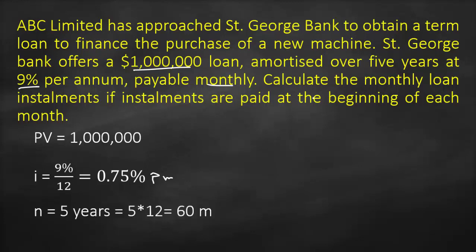Then we have the term loan of 5 years, but we said interest and time must have the same time unit. Consequently, I need to convert the years into months. So we get 5 times 12, which gives us 60 months. Now we have the same time unit.